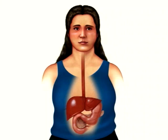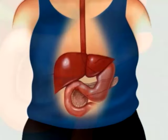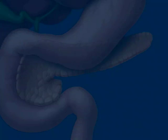Your body uses glucose for energy. Glucose metabolism requires insulin, a hormone produced by your pancreas. Here's how normal glucose metabolism works and what happens when you have diabetes, a disease where your body either can't produce enough insulin or it can't use insulin properly.